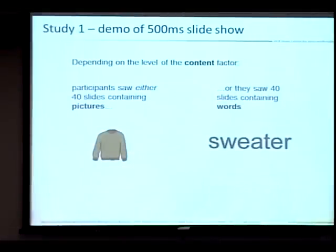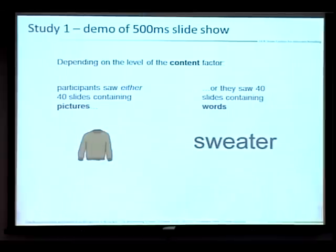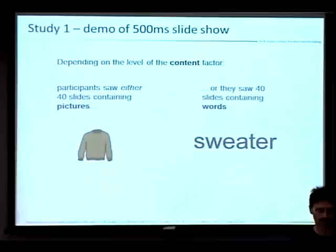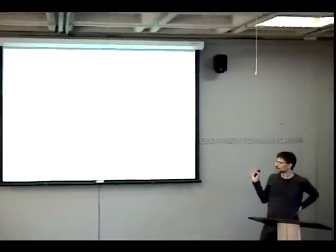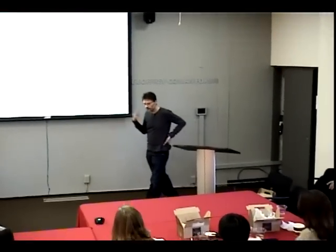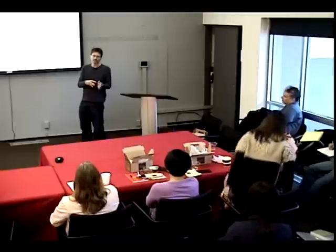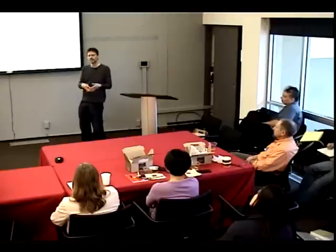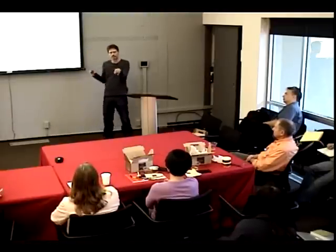People saw the slideshows and then, one at a time, were asked whether they recognized each image. Half were things they saw the first time, half were distractors. It's difficult — you have to really focus — but people actually got 70 to 80% of them correct. In terms of the types of errors, we're particularly interested in false memories: people saying they saw something when they actually didn't. That reflects a lack of thinking — a tendency to say yes to everything. More conservative thinking means fewer false memories.